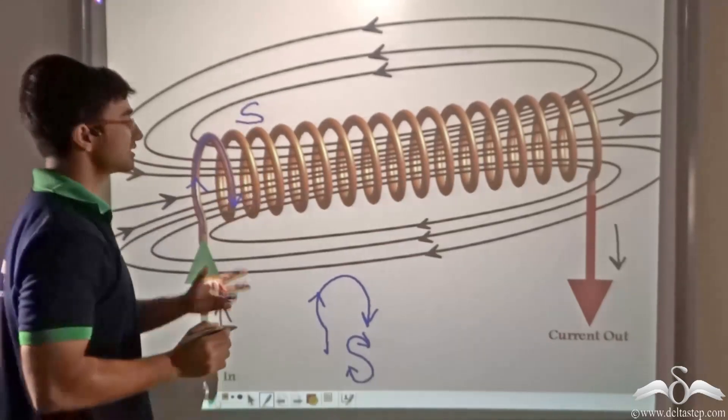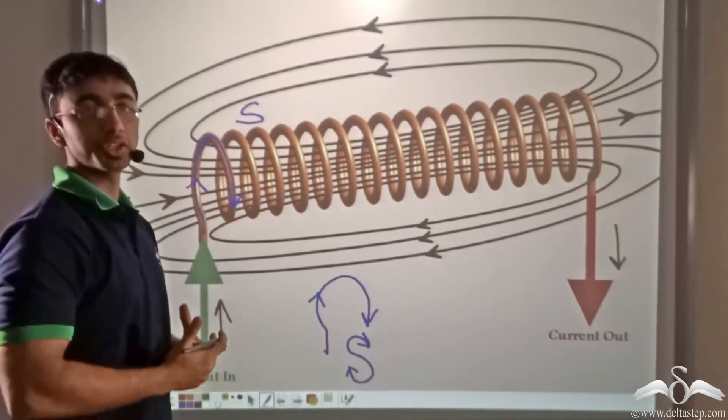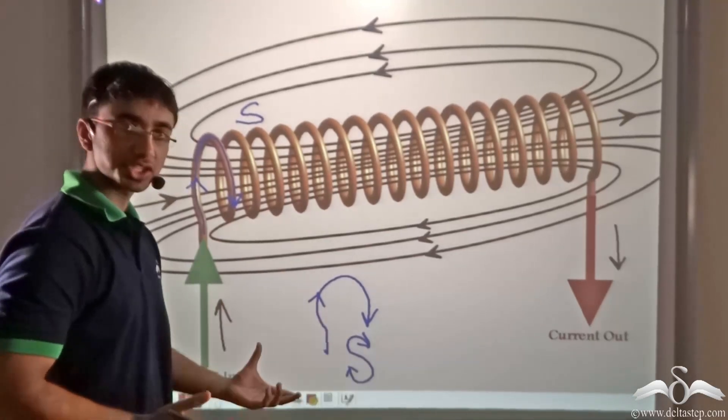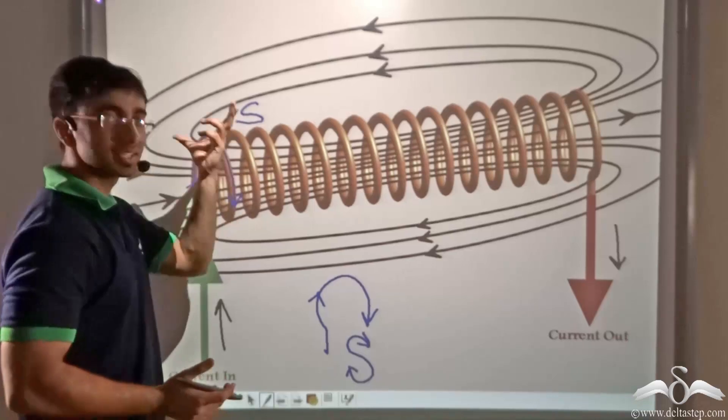So clearly this is the south pole, because if you recall from our previous discussion on a circular loop, when we have clockwise rotation of current, it implies the south pole.